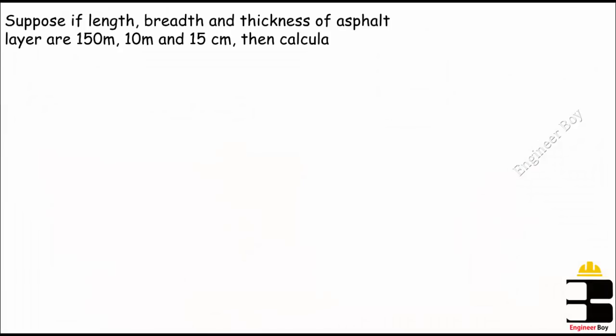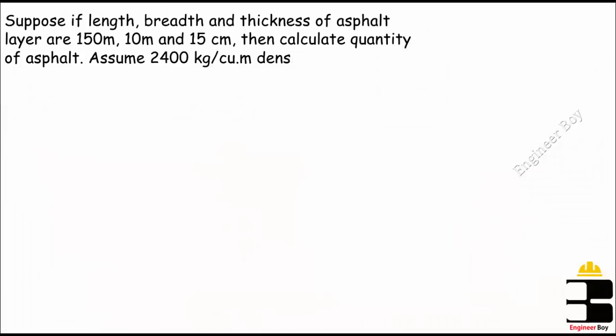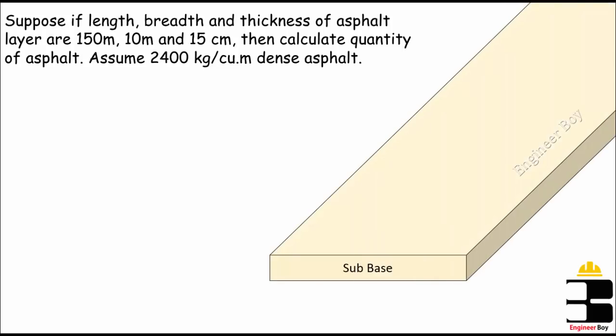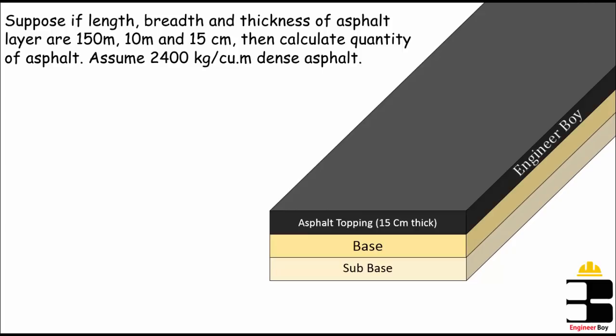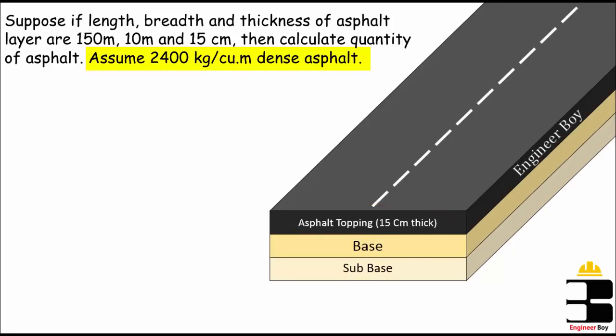Let's suppose the length of the asphalt layer is 150 meters, the breadth of the same layer equals 10 meters, and the thickness of the asphalt layer is 15 centimeters.